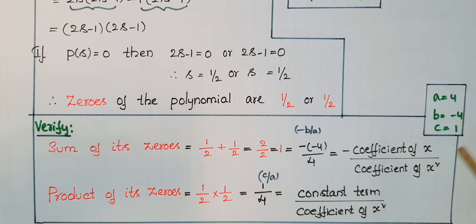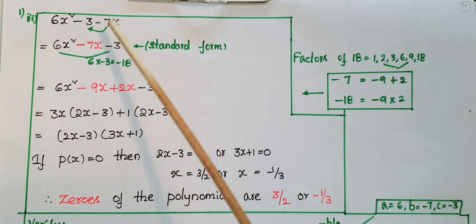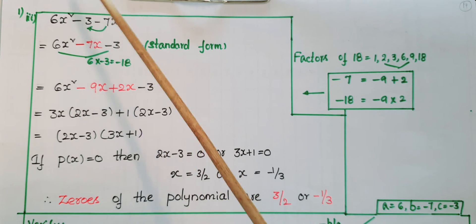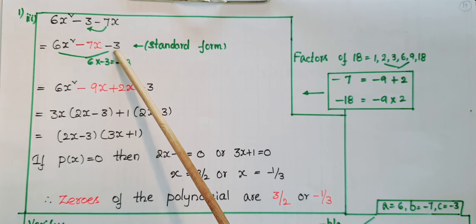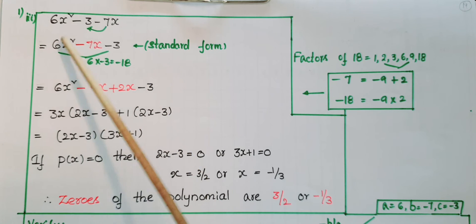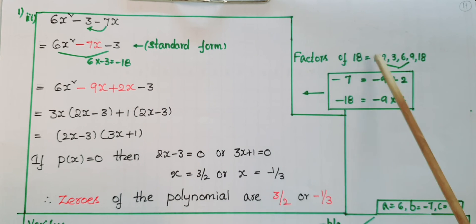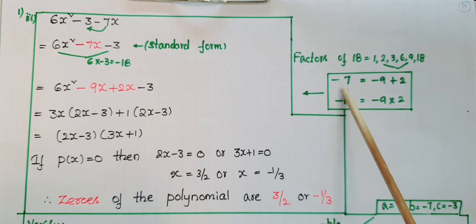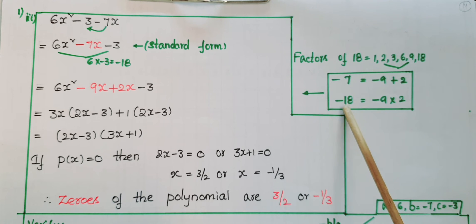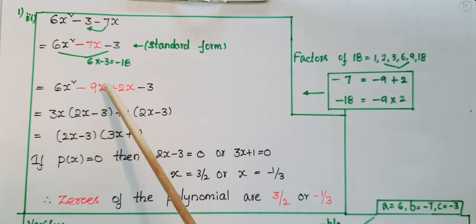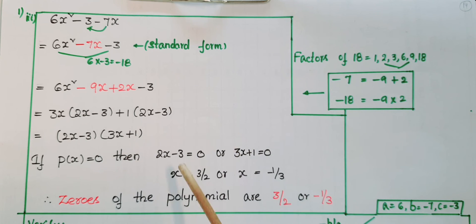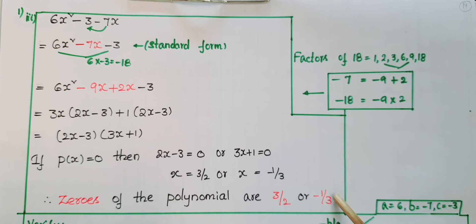Next polynomial: 6x² - 3 - 7x. This is not in standard form. Write it as 6x² - 7x - 3. Factorize: 6 × (-3) = -18. Factors of 18 are 1, 2, 3, 6, 9, 18. Choose -9 and 2 (sum = -7, product = -18). So 6x² - 9x + 2x - 3 = (2x - 3)(3x + 1), giving x = 3/2 or x = -1/3.